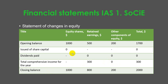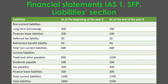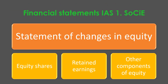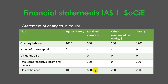The closing balance is then calculated. The only element that changed during the period in our example is retained earnings, with an increase of $300. Going back to the statement of financial position, the amount at the end of the period is in line with the statement of changes in equity — 1,800 and 200 — matching in both statements.